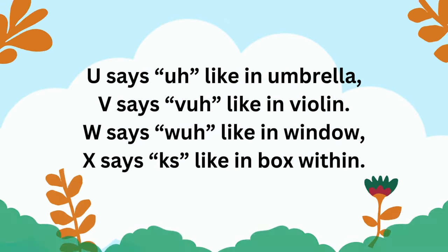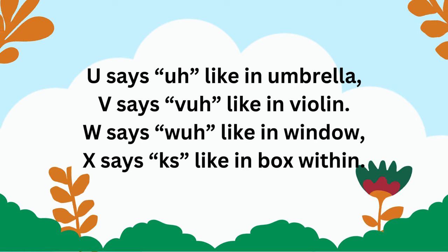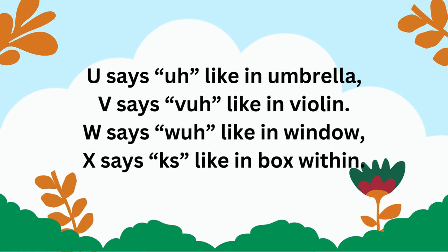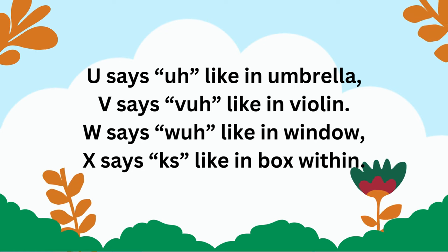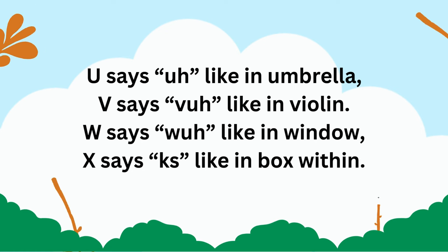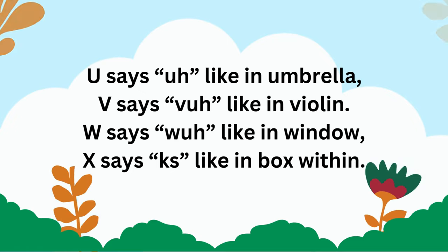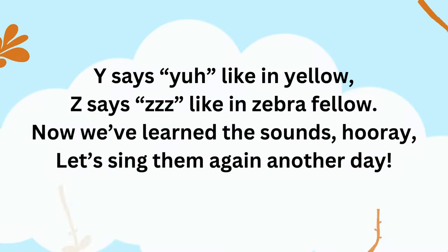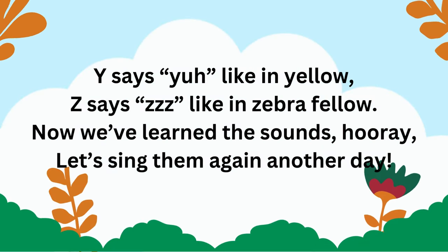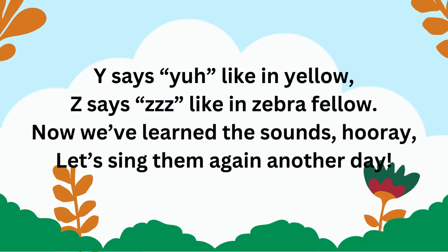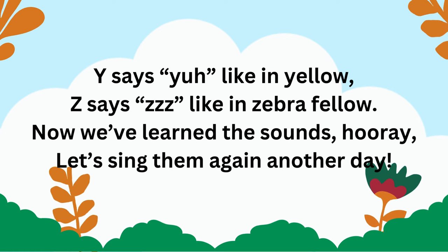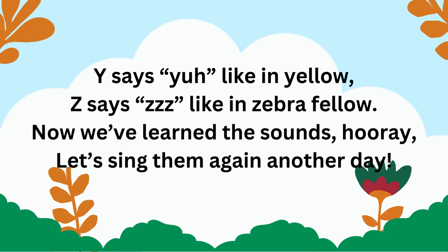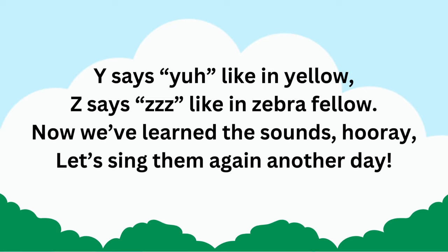U says U like an umbrella, V says V like an violin, W says U like an window, X says Kaz like an box within, Y says U like an yellow, Z says S like an zebra fellow. Now we've learned the sounds, Hooray!